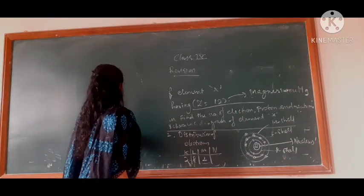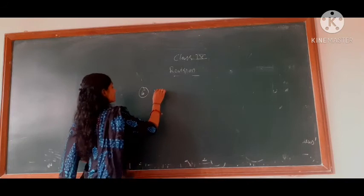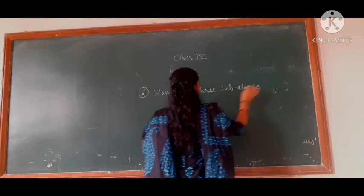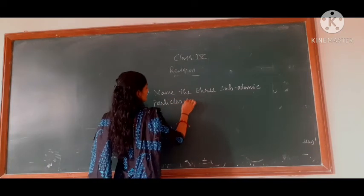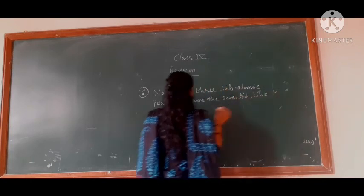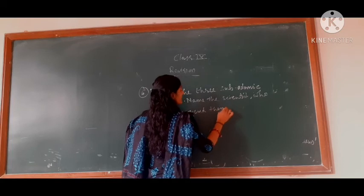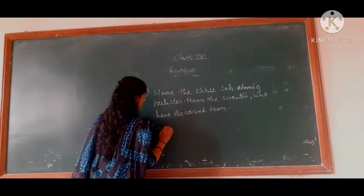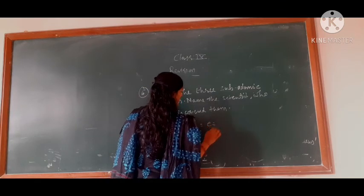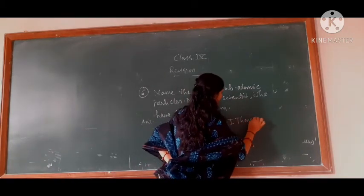Now we are moving to question 6: name the three subatomic particles. Name the scientists who have discovered them. Three subatomic particles: first is electron. Electron, we are going to represent by small e. It was discovered by J.J. Thomson. Second is proton, represented by small p.